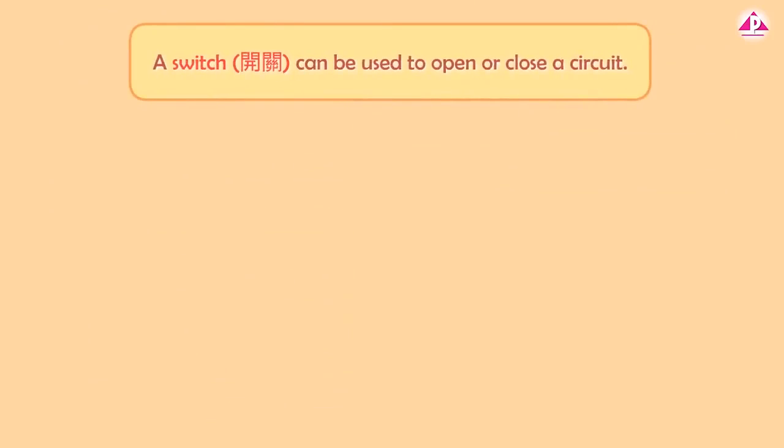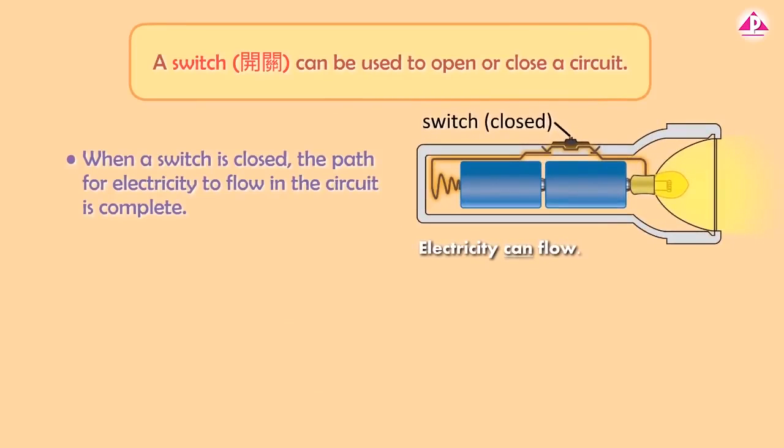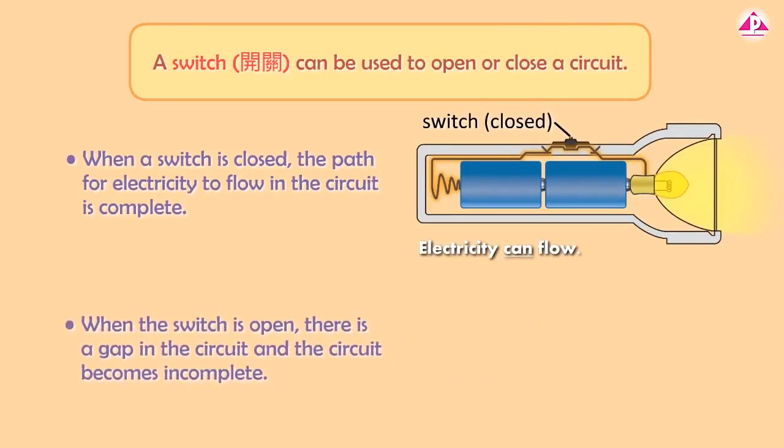A switch can be used to open or close a circuit. When a switch is closed, the path for electricity to flow in the circuit is complete. When the switch is open, there is a gap in the circuit and the circuit becomes incomplete.